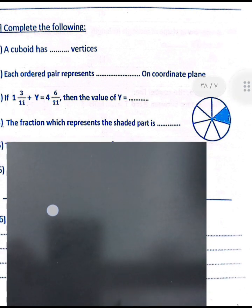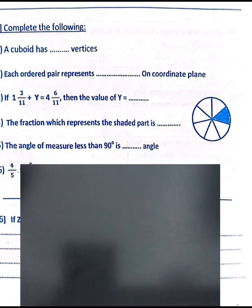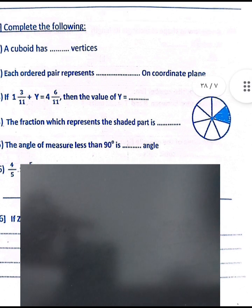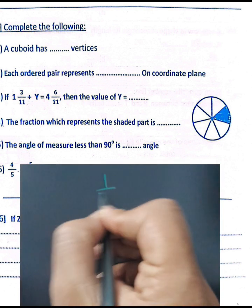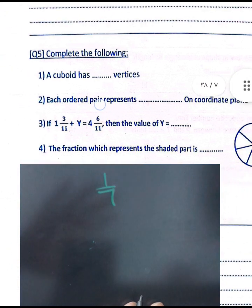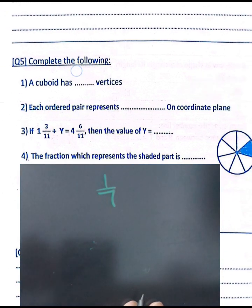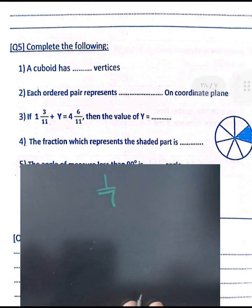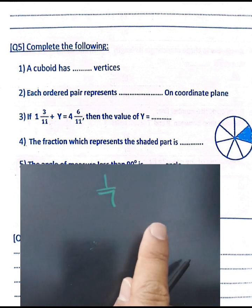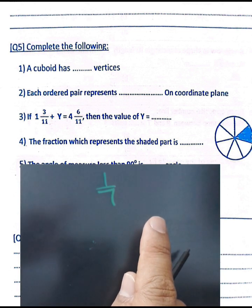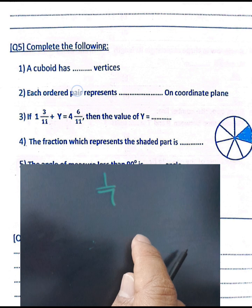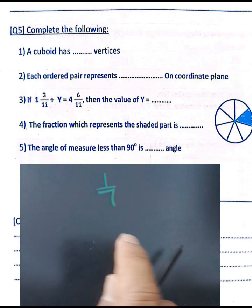Question number four: find the fraction representing the shaded part. Count the total parts: one, two, three, four, five, six, seven — seven parts total, with one colored part. The fraction is one over seven.